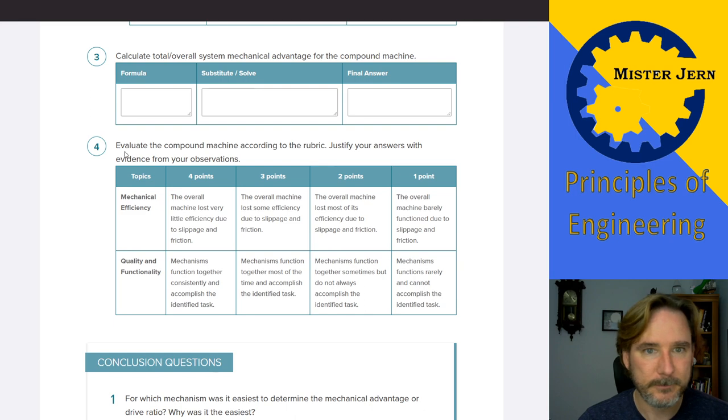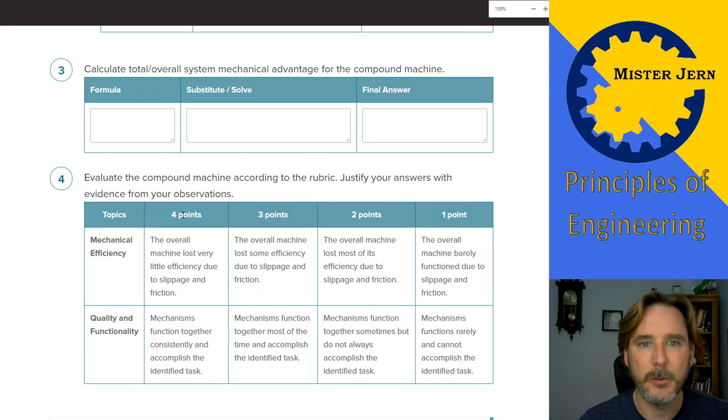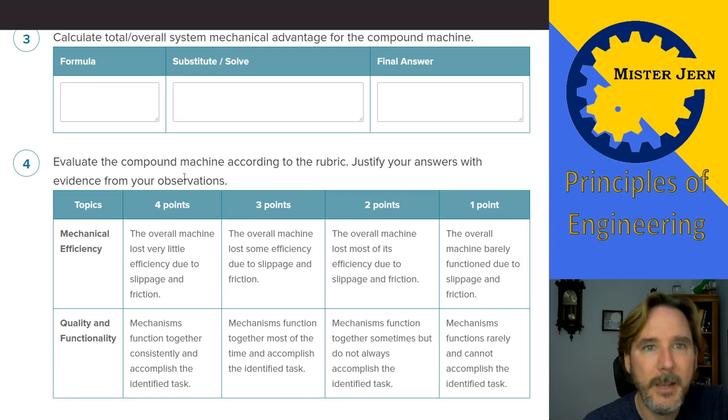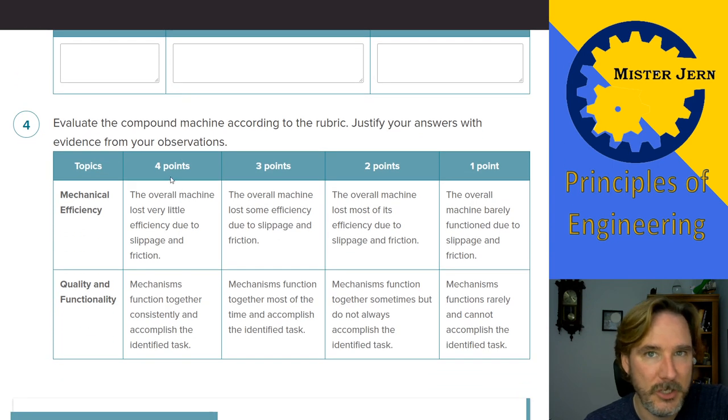So calculate the total system mechanical advantage for the compound machine. Fourth step. This one is a little interesting. I'm going to zoom in a little bit closer here. This one, you have to actually evaluate the machine. Okay. Here's a simple rubric for you to follow. You have to evaluate the machine according to this rubric and justify your, explain yourself. Okay. Using evidence from your observation.